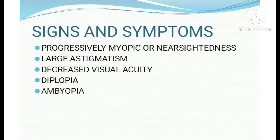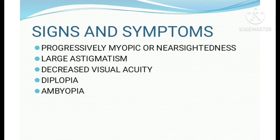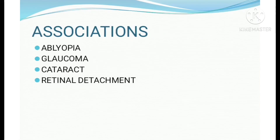What are the signs and symptoms of ectopia lentis? First: progressive myopia, or nearsightedness; larger astigmatism; decreased visual acuity; diplopia; and amblyopia. These signs and symptoms are associated with complications such as glaucoma, cataract, or retinal detachment.